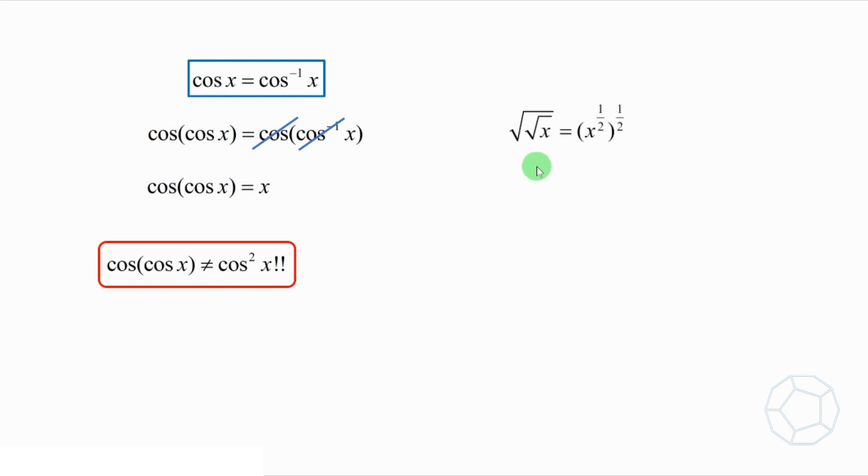Just like the square root of the square root of x is equal to x to the power of 1 over 2, everything to the power of 1 over 2, which is equal to x to the power of 1 over 4. On the other hand, the square root of x whole square is equal to x.